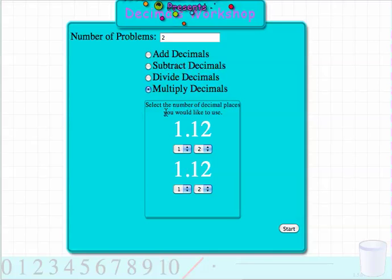In here it says select the number of decimal places you would like to use. So you can use from 1 to 3 before the decimal and from 1 to 5 after the decimal. Let's leave it as it is. So we have one number before the decimal and two after the decimal.